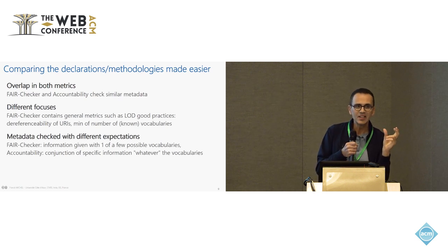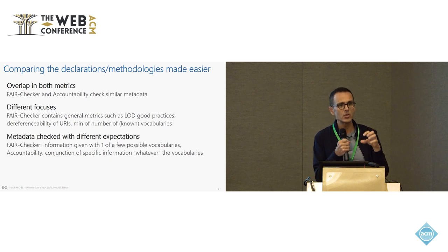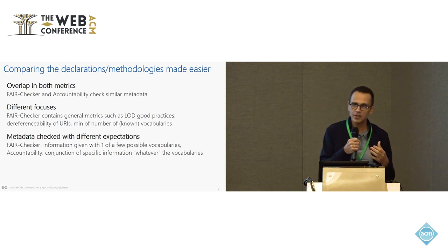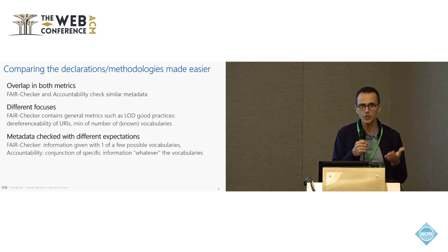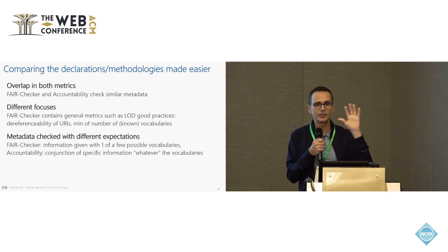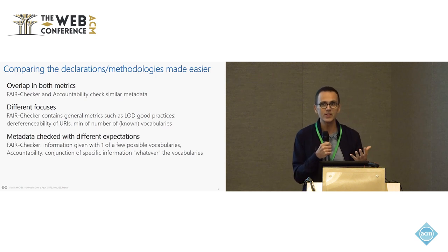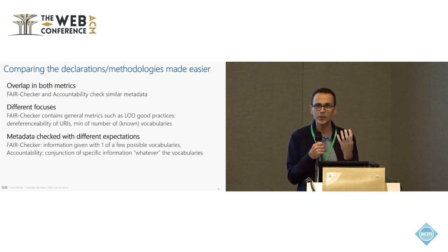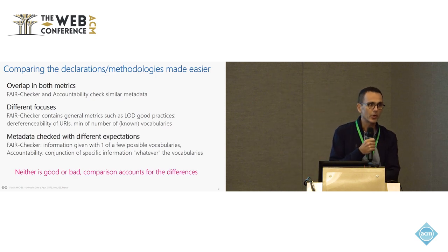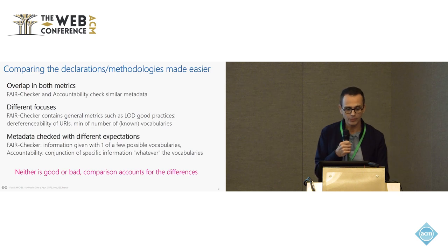About how the metadata are tested, there are also differences. FairChecker will typically look for a piece of information given by one triple — accepting two or three alternative properties from two or three vocabularies, but just one triple. The accountability measure does something slightly different: it expects the conjunction of several pieces of information to reach the goal. My point is just to illustrate that having two quality measures defined in the same standards and the same framework makes it very easy to compare them from a methodological standpoint.